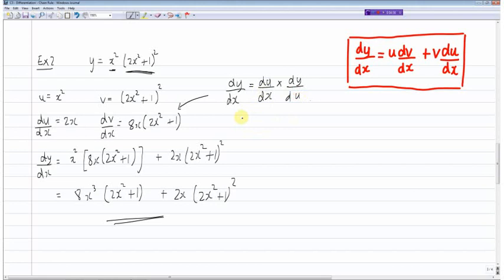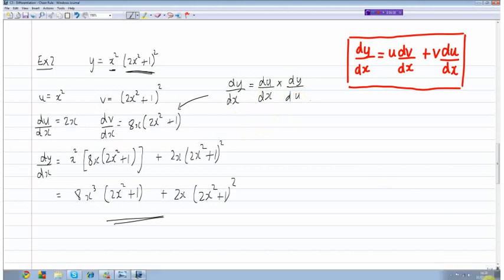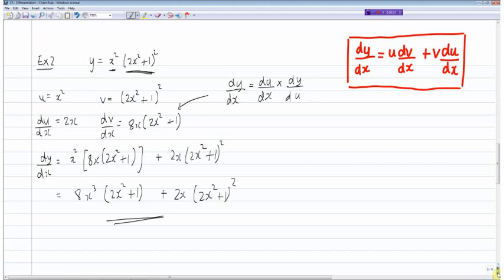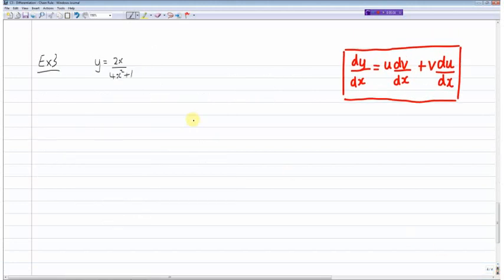Okay, so I'll go on to the next example. Okay, here we've got a fraction and more commonly people use the quotient rule, I believe, to work out differentiation when there's a fraction. However, I find the quotient rule a little bit longer than the product rule. And so I always use the product rule even though I have a fraction.